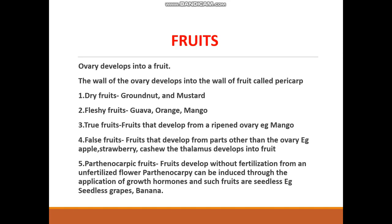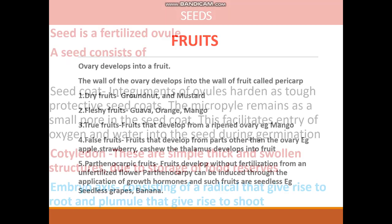There are dry fruits like groundnut and mustard, and fleshy fruits like guava, orange, and mango. Parthenocarpic fruits normally develop from a fertilized ovary, but when fruits start developing from an unfertilized flower, such fruits are called parthenocarpic fruits. Examples are seedless grapes and banana.